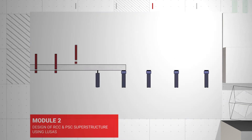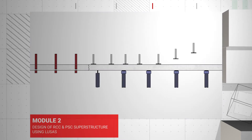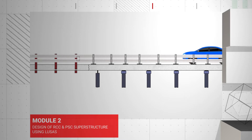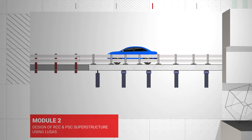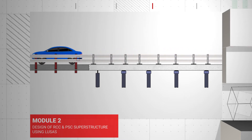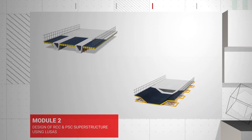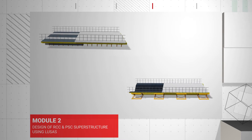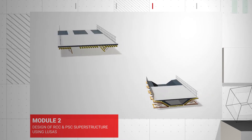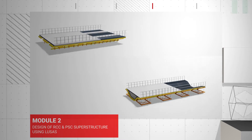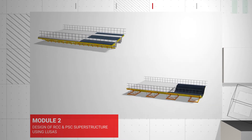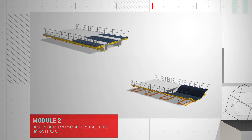Module 2 covers the design of bridge superstructures using reinforced concrete and pre-stressed concrete. You will learn how to design different types of superstructures including girders and slabs, and learn about pre-stressing losses and their calculations.